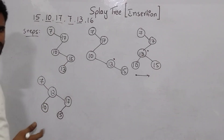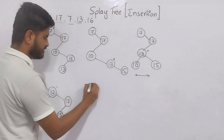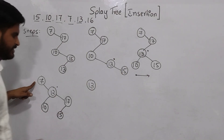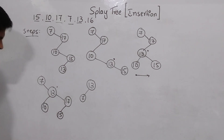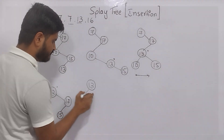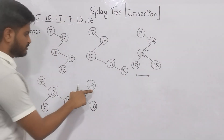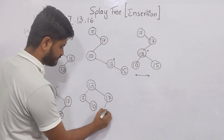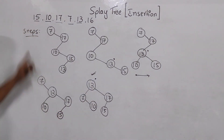You can solve splay tree insertion without zig rotation and zag rotation using this approach. Now 13 is here and I must make it the root. I replace 13 with 7. From upside to downside, left to right: 7 is less than 13, so it goes left. 10 and 17 are children of 13 — from left to right: 10 is less than 13 but greater than 7, so 10 goes here. 17 is greater than 13, so it goes to the right. 15 is greater than 13 but less than 17. Step 5 is complete.